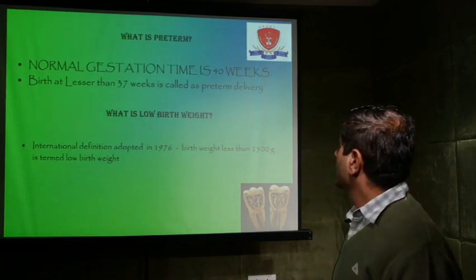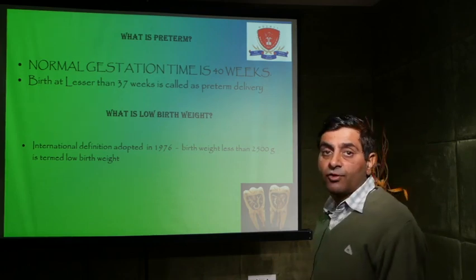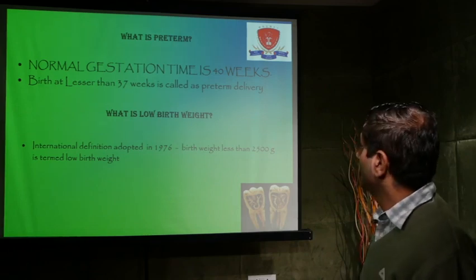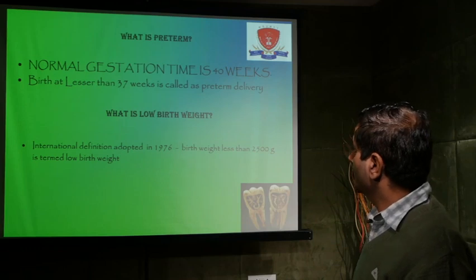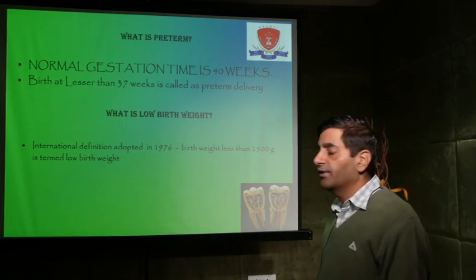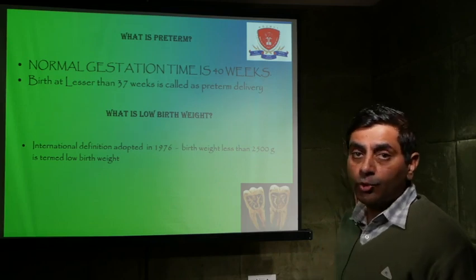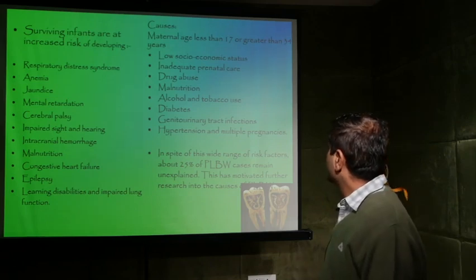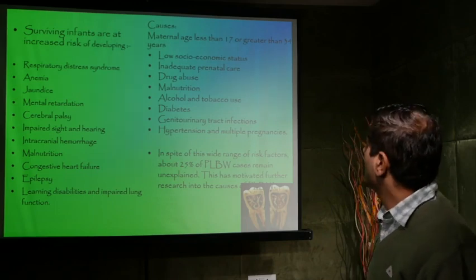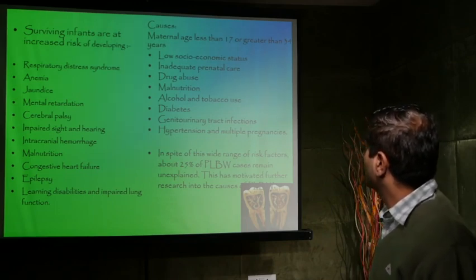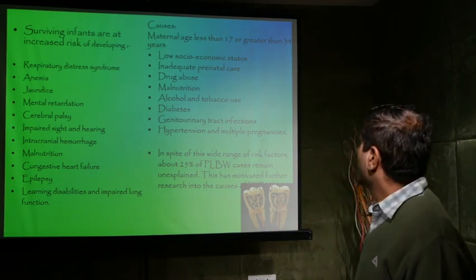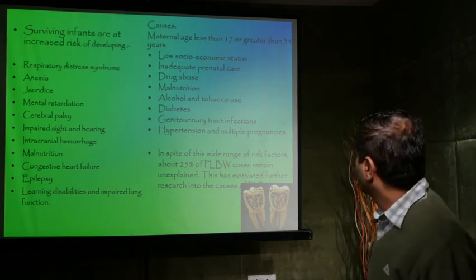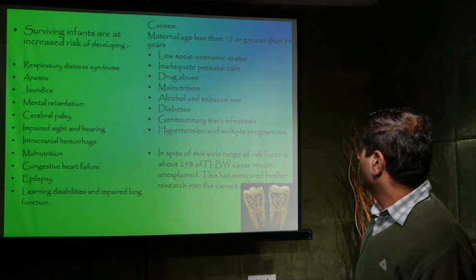Coming to preterm low birth weight and periodontal disease: normal gestation time is 40 weeks, so birth at less than 37 weeks is called preterm delivery. According to the international definition adopted in 1976, birth weight less than 2,500 grams (2.5 kg) is termed low birth weight. Main causes include maternal age less than 17 or greater than 34 years, low socioeconomic status, inadequate prenatal care, drug abuse, malnutrition, alcohol and tobacco use, diabetes, genital urinary tract infections, hypertension, and multiple pregnancies.